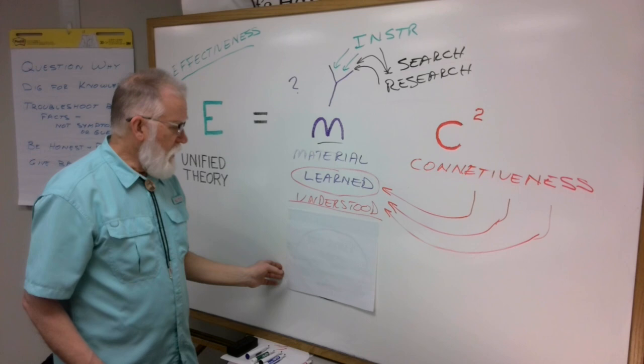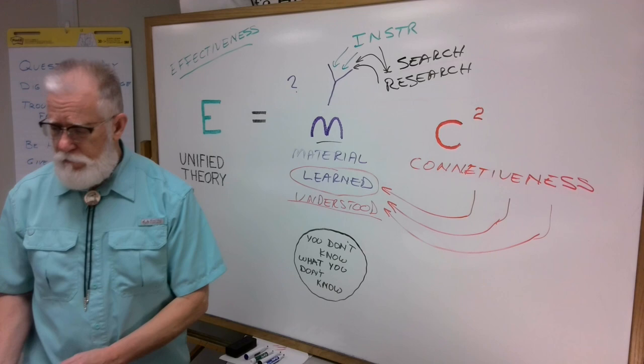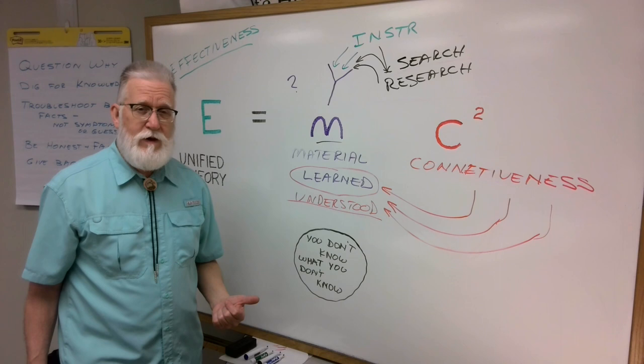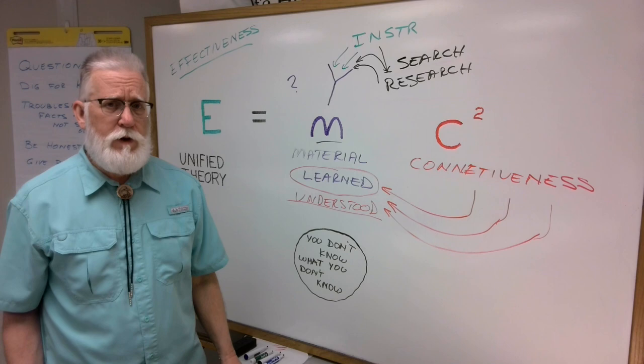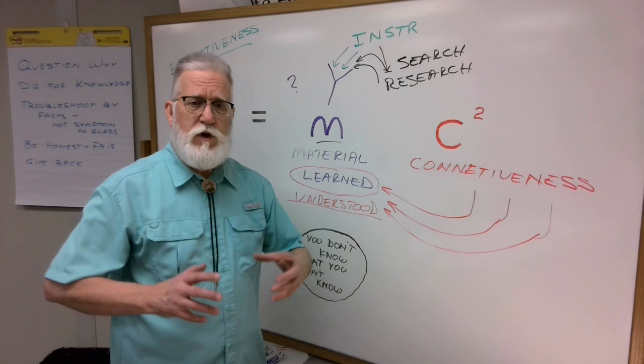The last part to understand in this unified theory of relativity is black holes. And yes, there is a black hole, and that black hole is what we don't know. We don't know what we don't know. We have to be humble and have our mind open, especially after years in the field, to learn more things and to expand our knowledge. That's important.